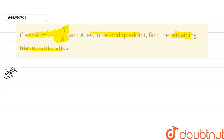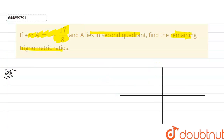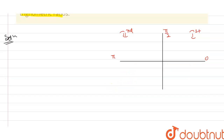So first of all, this is my solution section. If I draw on the coordinate here: from 0 to pi by 2, or 0 to 90 degrees, we have the first quadrant. From pi by 2 to pi, or 90 to 180 degrees, is the second quadrant. From pi to 3 pi by 2, or up to 270 degrees, is the third quadrant. And from 3 pi by 2 to 2 pi is the fourth quadrant.